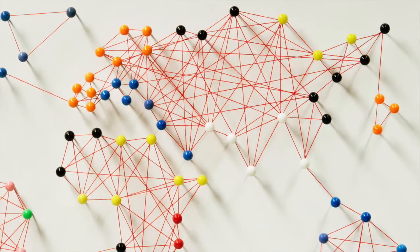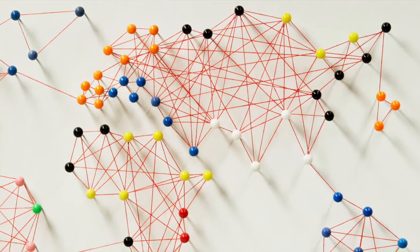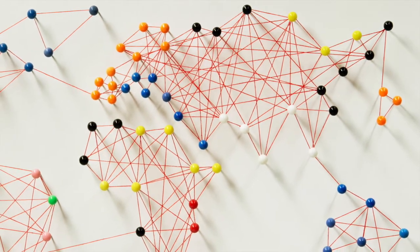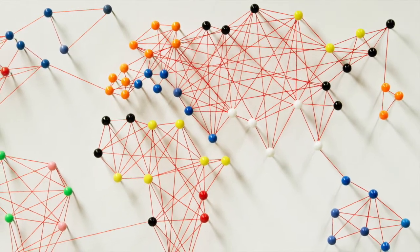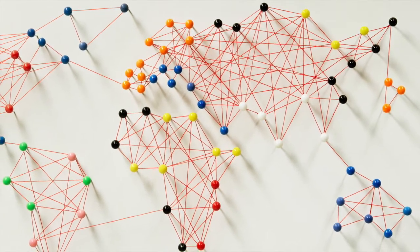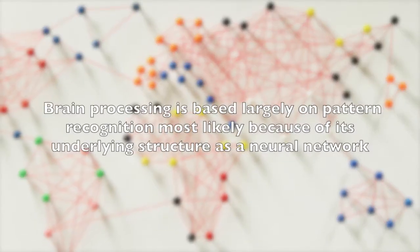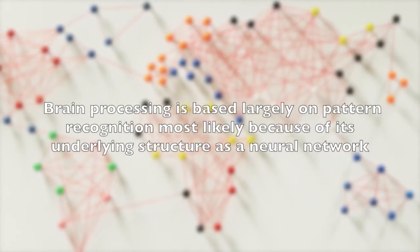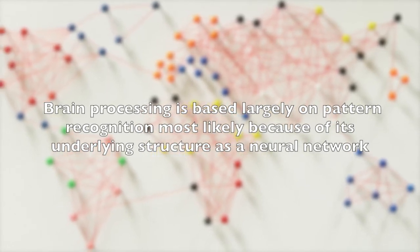One of our strengths as cognitive beings is making connections between different events, ideas, visual patterns, or other phenomena. Human cognition is so well designed to see patterns that we sometimes see patterns that are not even present. Brain processing is based largely on pattern recognition, most likely because of its underlying structure as a neural network.